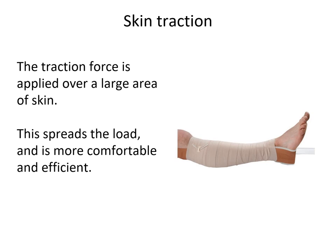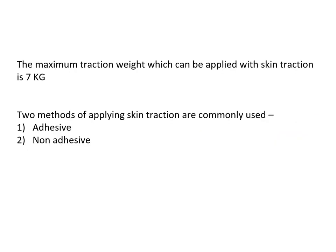In skin traction, we cannot apply a larger force as the skin will excoriate or peel off, so the traction is applied over a large area — this spreads the load and is more comfortable and efficient. The maximum traction that can be applied is approximately 7 kilograms (6.7 kg). There are two types of skin traction: adhesive skin traction, where we use an adhesive material, and non-adhesive skin traction, where we apply a bandage over the limb and press it.